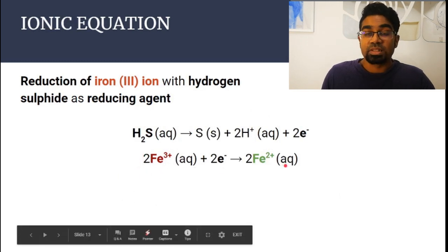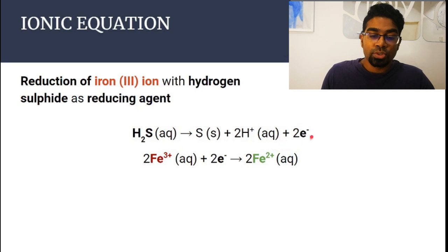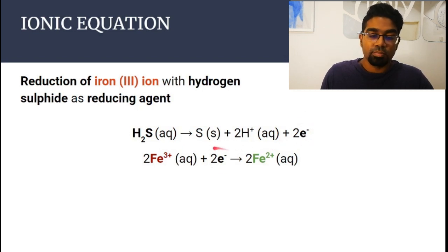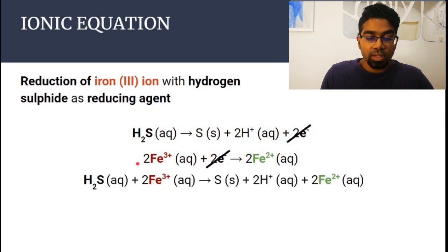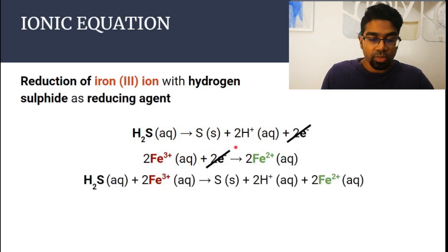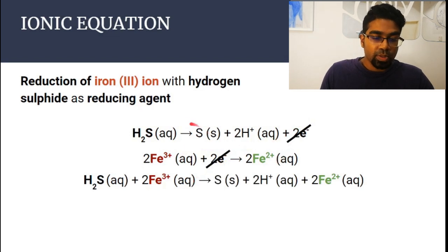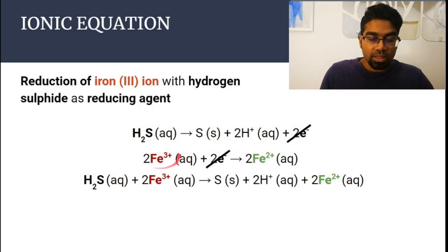Iron's half equation doesn't change — it's the same. In this case we also lose two electrons, therefore two electrons must be gained by iron-3 ions, so there's a two in front. In order to form the full ionic equation, we cancel out the two electrons. Then we get hydrogen sulfide plus iron-3 ion on the left, giving sulfur, H⁺, and Fe²⁺ on the right.